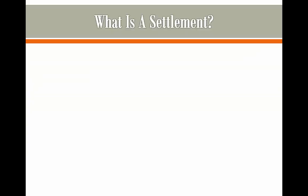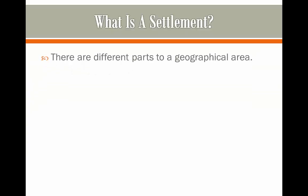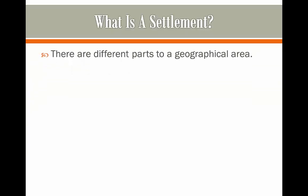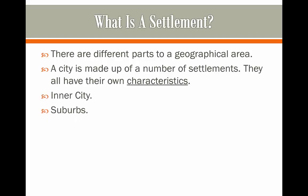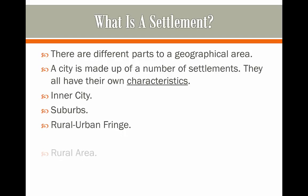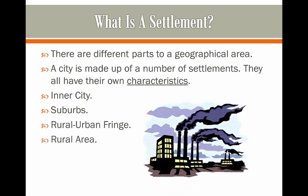What is a settlement? There are different parts to a geographical area, and a city in the geographical area is made up of these settlements. Each one has their own characteristics. There is the inner city, the suburbs, the rural urban fringe, and the rural area.